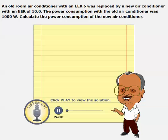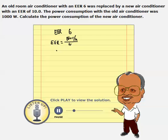We have an old air conditioner with an EER of 6. EER is basically Energy Efficiency Ratio, which is given by the number of BTUs the air conditioner is pulling out per hour divided by watts of power it consumes. In this problem, we are given the EER as 6, and we need to calculate the BTUs it's capable of pulling out. We also know that it is consuming 1,000 watts of power.